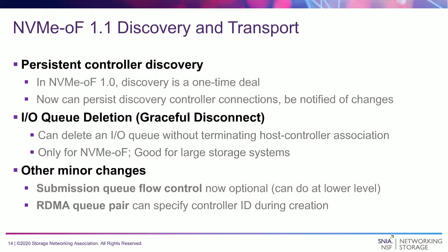Other changes focus on discovery and transport. There's now a persistent discovery controller. In NVMe over Fabrics 1.0, you connected to a discovery controller, it told you what storage was available — a one-time deal. If anything changed, you'd have to make a new connection and do a new discovery. Now you can have a persistent connection. The host can say, keep my connection to the discovery controller alive, and the discovery controller can send asynchronous notifications to the host, letting them know if there are new resources — for example, more storage or SSDs available.